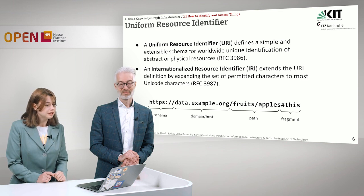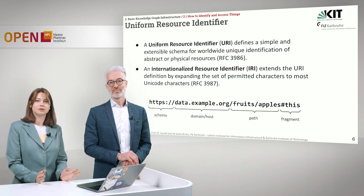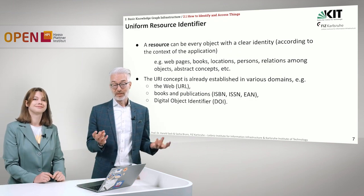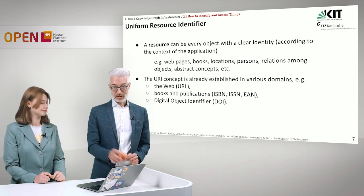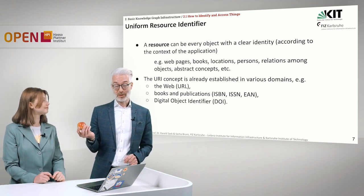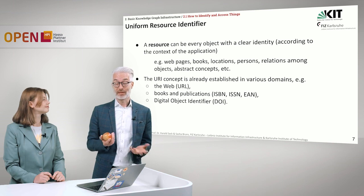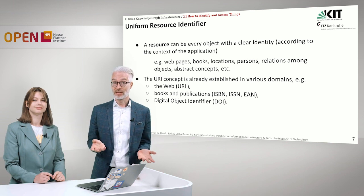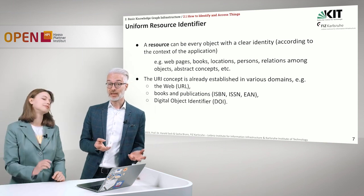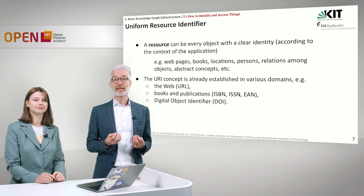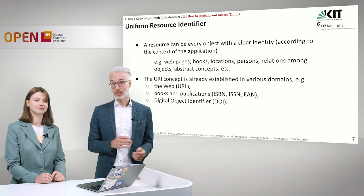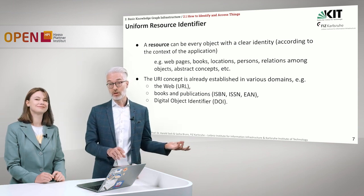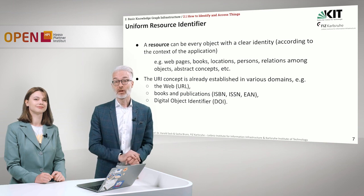Everything seems to be clear, but there is one question left: what is actually this resource we are talking about? On the web, usually resources are documents. But we want to talk about apples — apples are not on the web, but there might be descriptions of such things. A resource that we can identify might be everything that has a clear identity in the context of our application: not only an apple, but also a web page, a book, a location, a person, relations — everything you can think of.